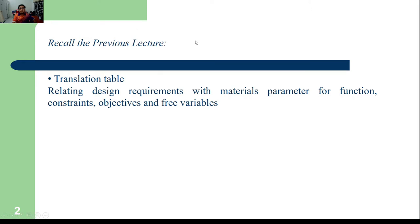In the previous lecture, I talked about creating a translation table — how you need to transfer or interpret information acquired from a design engineer, customer requirements, or market surveys, and how you translate that information into specification requirements for your design. These requirements help you decide what materials or processes to use, based on parameters such as function, constraint, objective, and free variables.